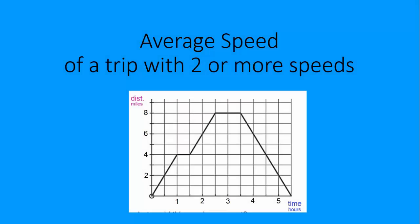Let's calculate average speed. That means if you have a trip with different rates of speed going on, how do you find the average rate of speed for the whole trip?